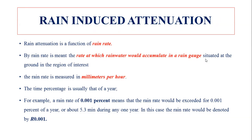Rain rate means the rate at which rainwater would accumulate in a rain gauge. If the rainfall is very heavy, the rain droplets will be very large in size and continuous. The rain gauge measures how much rainfall has occurred in the area of interest — the area where we are measuring the signal — and we deploy the rain gauge there.